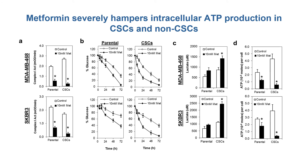Recent studies have suggested that metformin might inhibit tumor cell proliferation through inhibiting complex 1 of the respiratory chain in mitochondria and production of ATP. To determine the mechanism by which metformin affects metabolism, we analyzed its effects on mitochondrial complex 1 activity, glucose consumption, lactate production, and intracellular ATP generation in both cell populations. As shown here, metformin decreased complex 1 activity by more than 70% in non-stem breast cancer cells and up to 90% in breast cancer stem cells. Metformin also accelerated glucose consumption more severely in breast cancer stem cells and augmented production of lactate, indicative of increased glycolysis. Interestingly, despite the increase in glycolysis, the production of intracellular ATP was severely hampered, particularly in breast cancer stem cells.